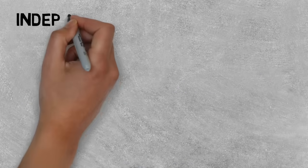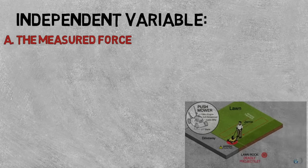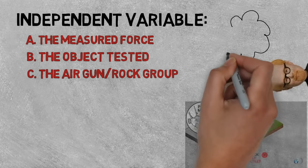Now which of the following is the independent variable of this experiment? The measured force of the bullet and the rock, the object being tested, or the air gun rock group?